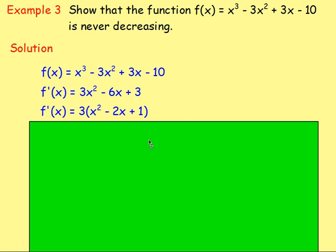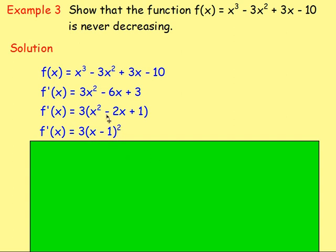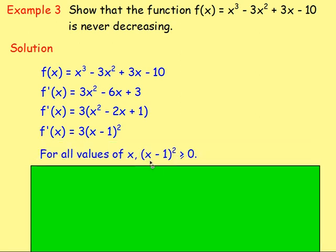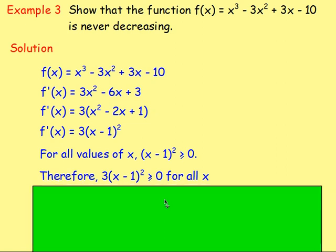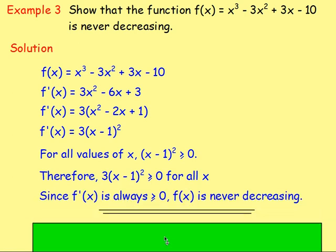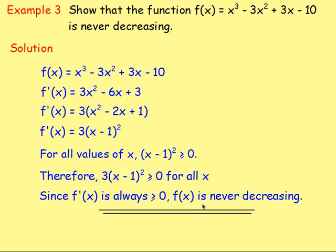Factorizing x squared minus 2x plus 1 gives 3 times (x minus 1) squared. When you square any number you always get something positive or zero. So for all values of x, (x minus 1) squared is always bigger than or equal to 0, and multiplying by 3 still gives a non-negative result. Therefore 3(x minus 1) squared is greater than or equal to 0 for all values of x, so since the derivative is always non-negative, f(x) is never decreasing.